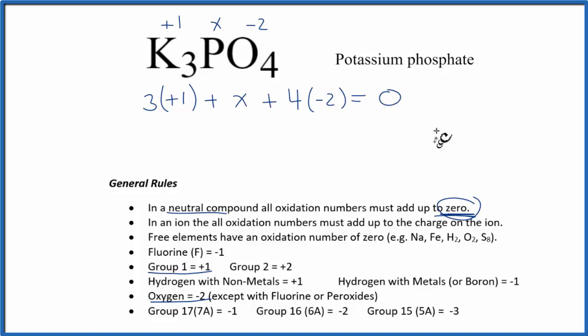So now we just need to do the math. 3 plus x minus 8 equals 0. So x minus 5 equals 0. And then x equals 5, positive 5. And that's the oxidation number here for the phosphorus, plus 5.